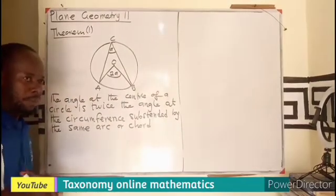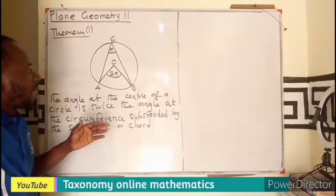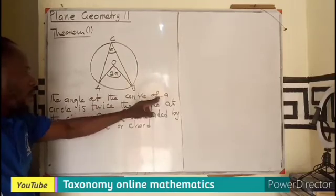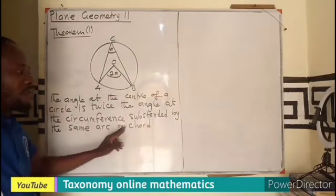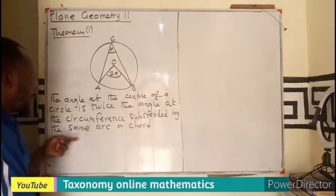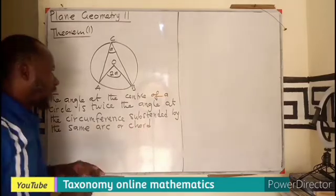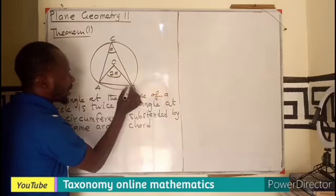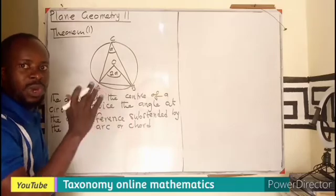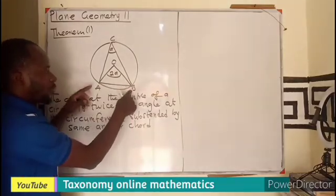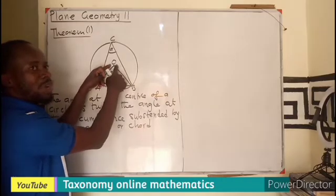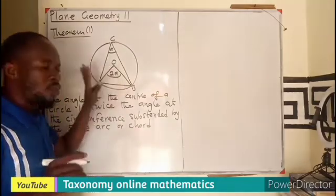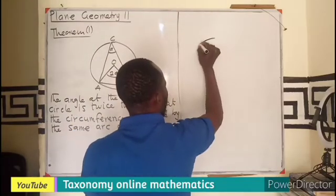So Theorem 1 states: the angle at the center of a circle is twice the angle at the circumference, subtended by the same arc or the same chord. In this case, arc AB subtends an angle at the center, and the same chord AB subtends an angle at the circumference. This theorem works in this configuration.